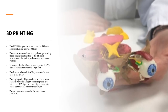Now we will explain the 3D printing process in detail. First, the DICOM images are imported into software, processed, and manipulated to generate the three-dimensional models. Subsequently, the 3D model is exported in STL format, compatible with the 3D printer used. In our case, the Form 2 SLA 3D printer was used — a high-quality, high-precision printer based on laser stereolithography technology that uses ultraviolet light to convert liquid resin into solids, tracing the shape of each layer.